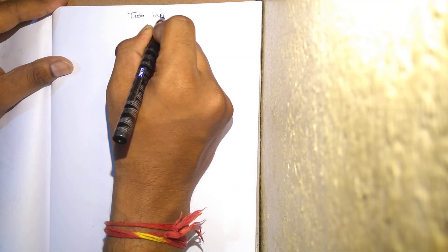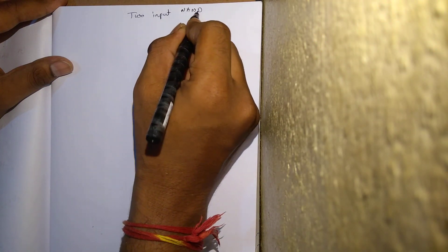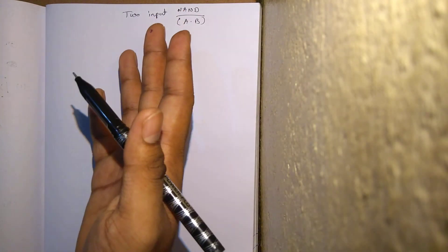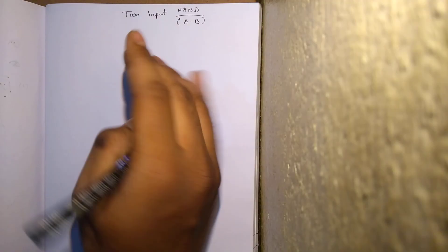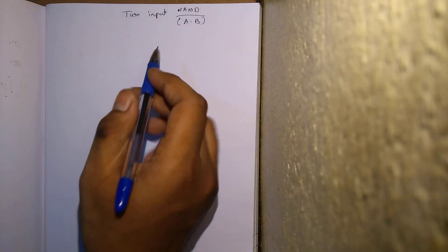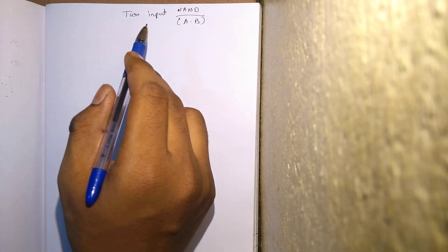I hope it is visible to you. So the 2-input NAND gate expression is A dot B whole bar. As there is a complement over the expression, our first condition is satisfied and we can proceed for the static CMOS diagram, and then we can draw the stick diagram for the static CMOS diagram.